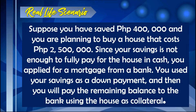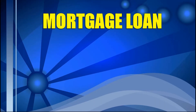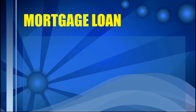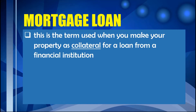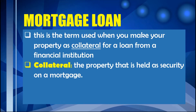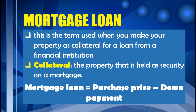In this real-life scenario, there are two important concepts mentioned: the mortgage and down payment. The remaining balance — the amount loaned from the bank — is called a mortgage loan. It is a term used when you make your property as a collateral for a loan from a financial institution. When we say collateral, it is the property held as security on a mortgage — it's like depositing your property to that financial institution.